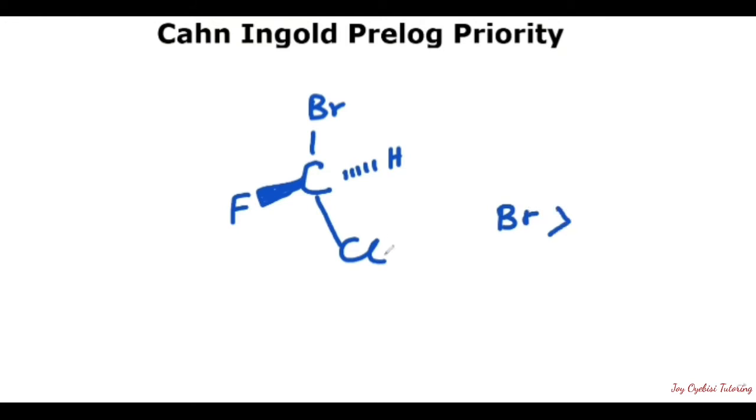Bromine is greater than chlorine, which is greater than fluorine, then greater than hydrogen.